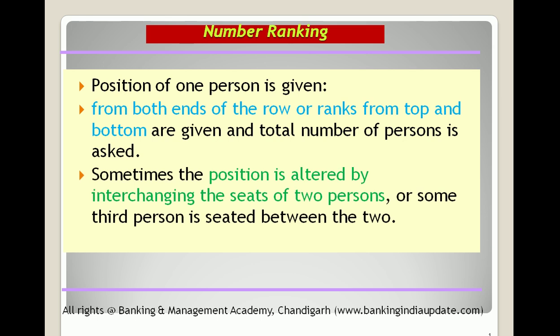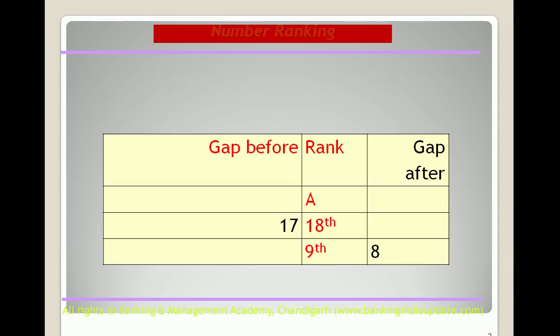In another type of question, there are two persons sitting in a row and their seats are interchanged; then the total number of seats or the position of a third person is asked.